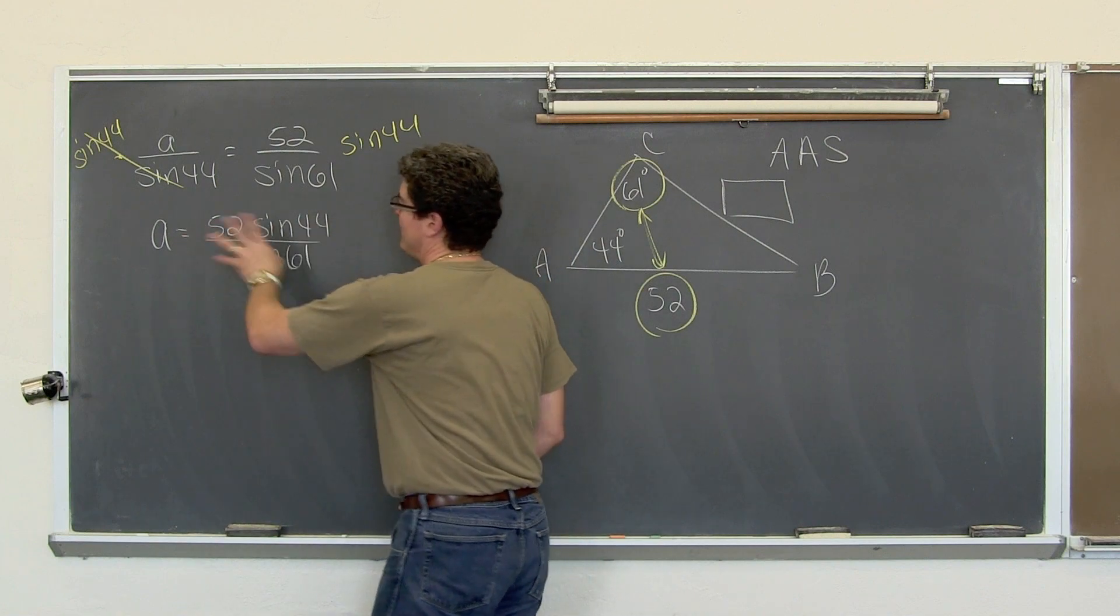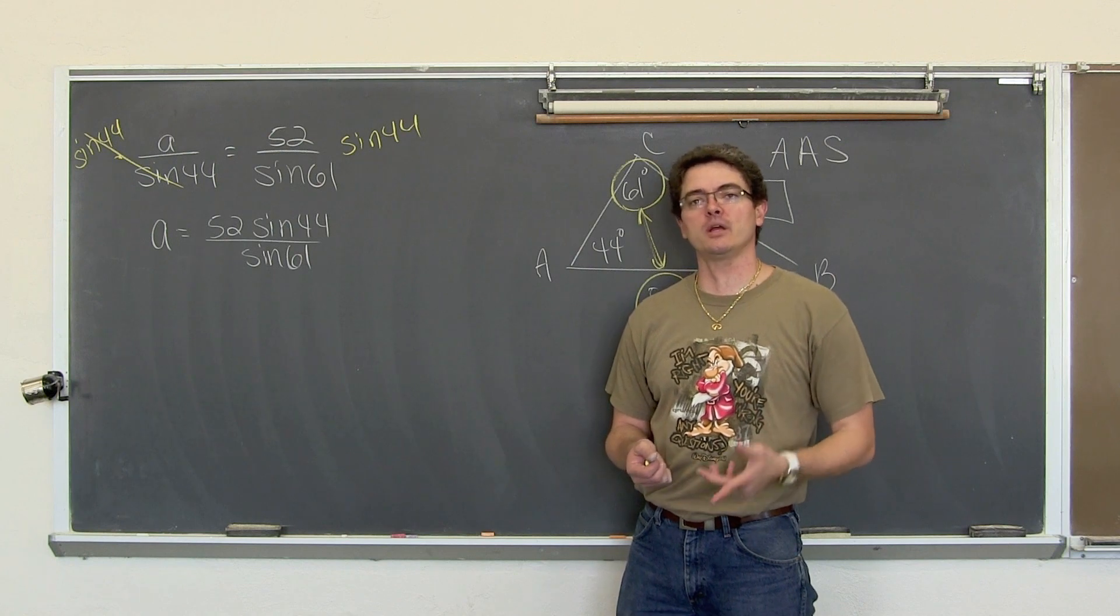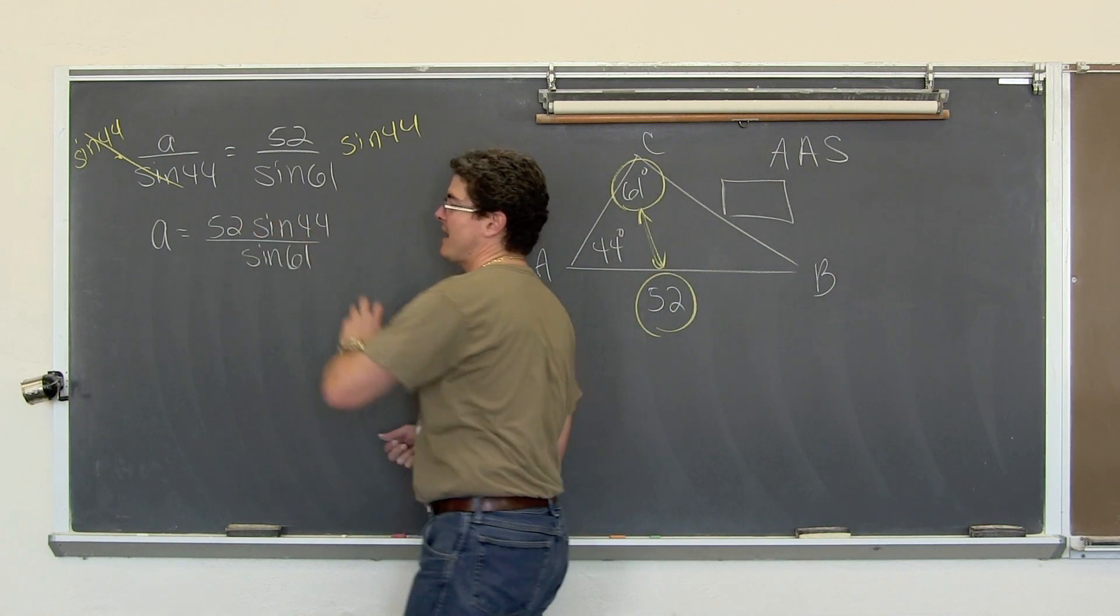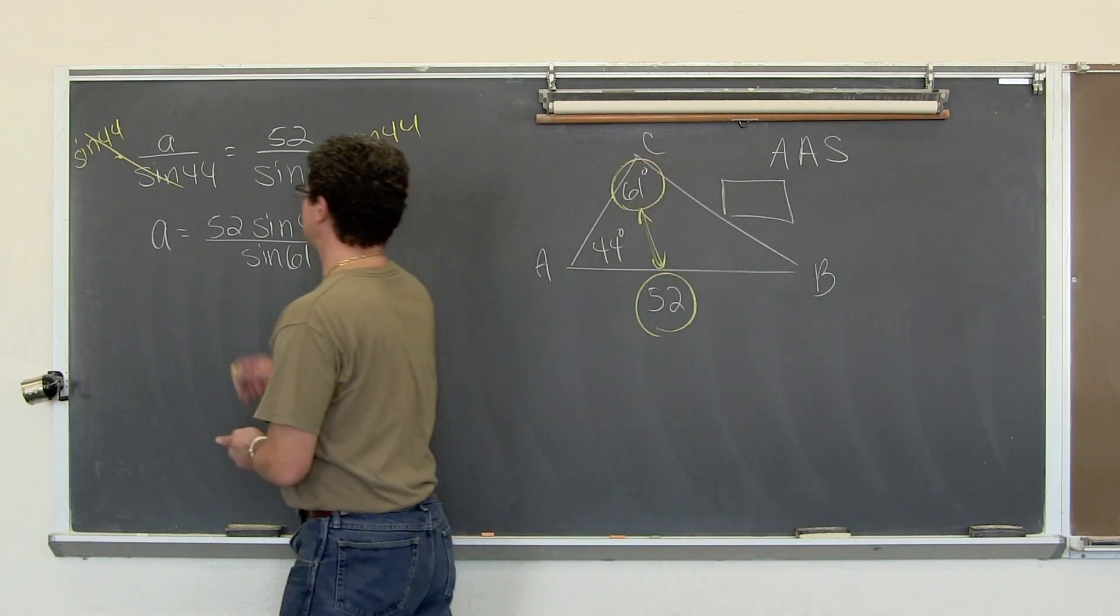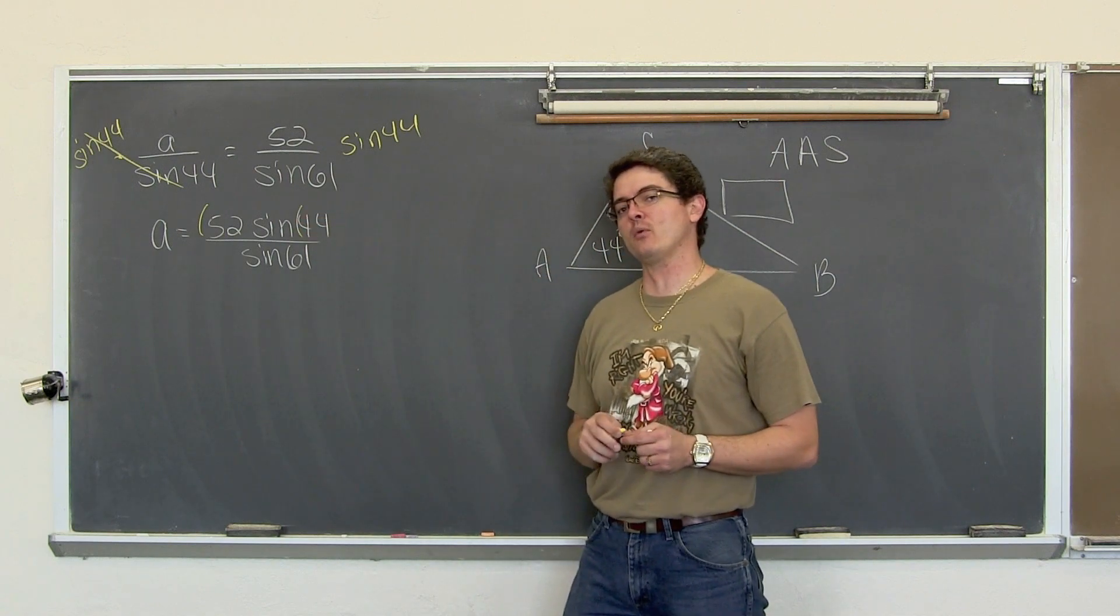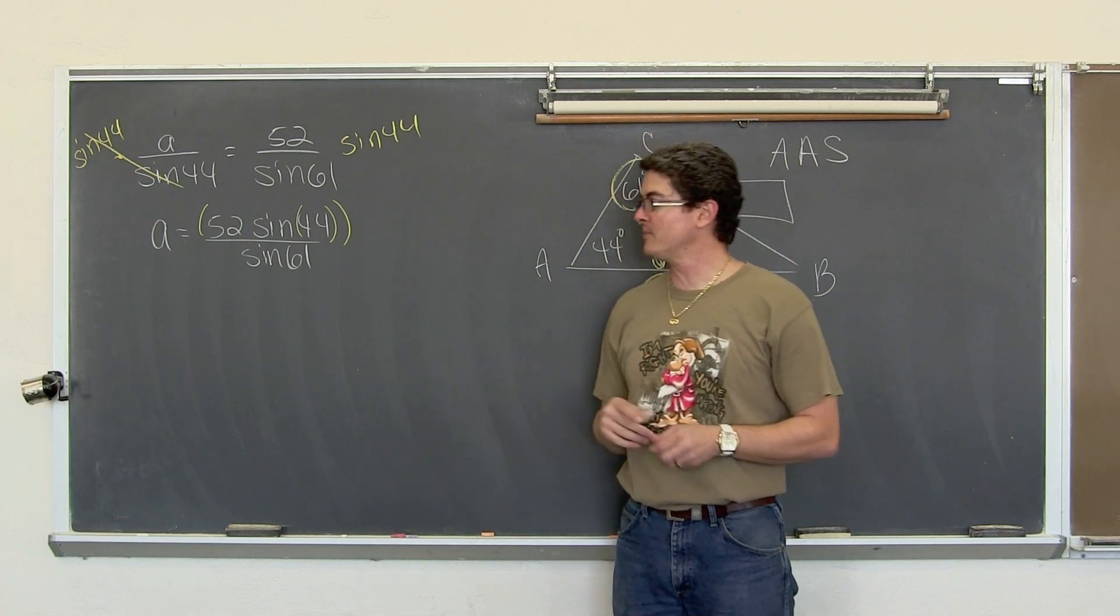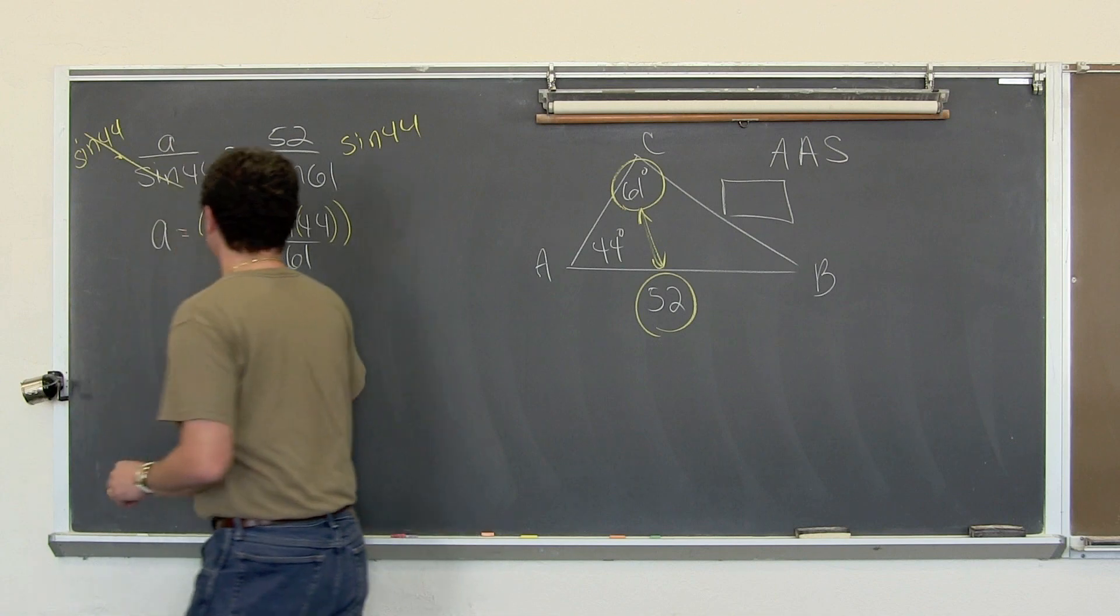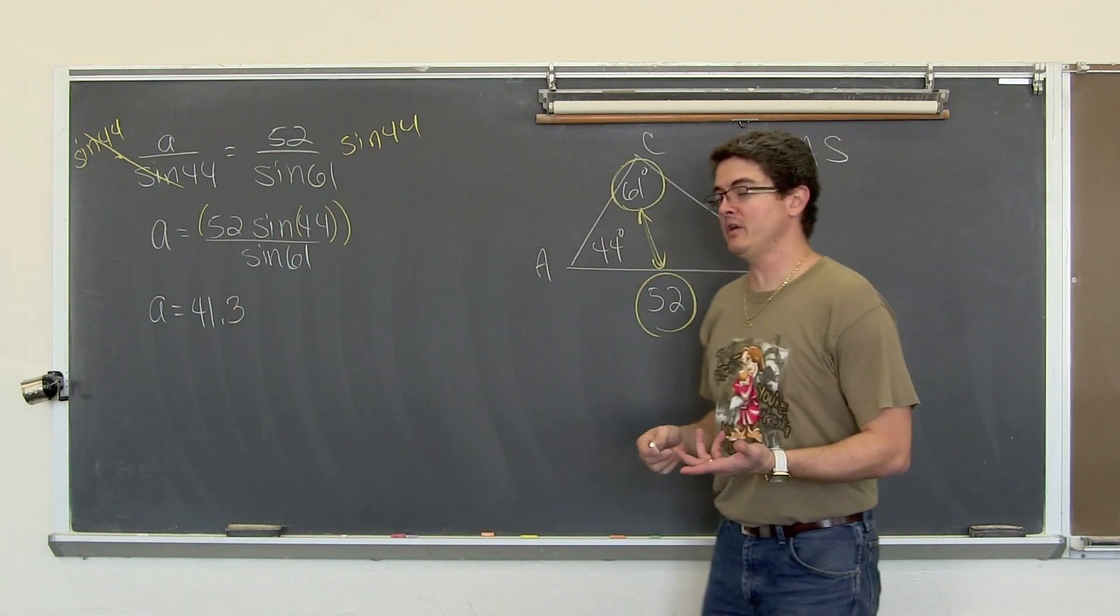Any time we are trying to solve an equation and we want to move something away from the variable, we always just have to do the opposite math operation. So we are going to multiply both sides by the sine of 44. And so we have a equals 52 times the sine of 44 over the sine of 61.